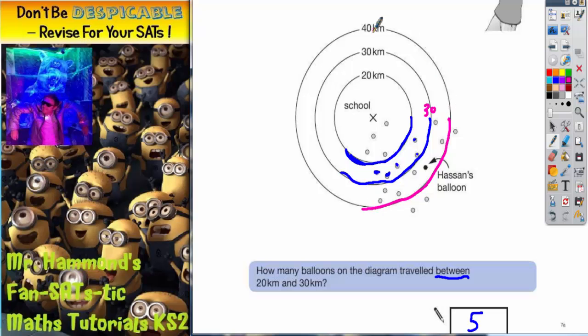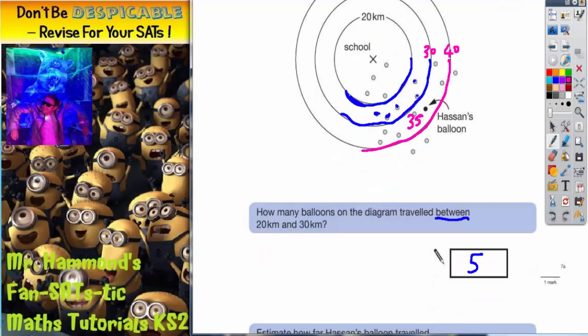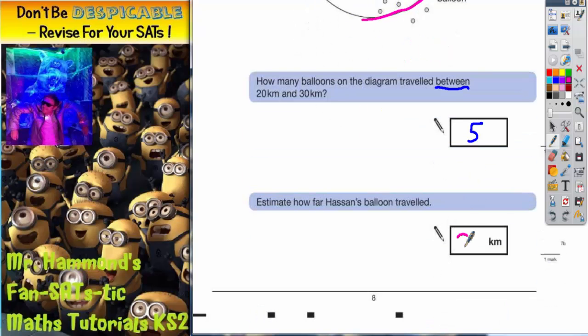is, if you follow it all the way round to the top, is 40 kilometres. So Hassan's balloon appears to be halfway between 30 and 40 kilometres. And halfway between 30 and 40 is going to be 35. So our best estimate for that is 35 kilometres. And there's your two answers.